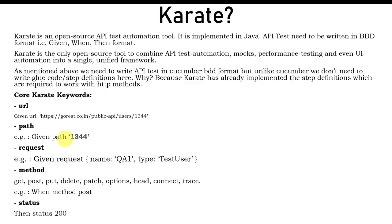Then comes the request keyword. If you are using methods that require a body — for example, a POST method — you need to pass a body using the request keyword. For example, 'When method post' requires you to define the request body inline as JSON, though you can also pass it from a JSON file, which we'll see in later examples.